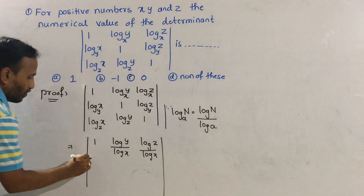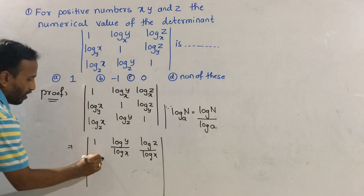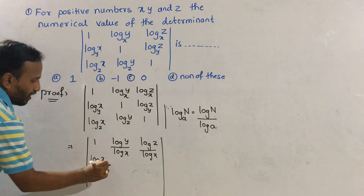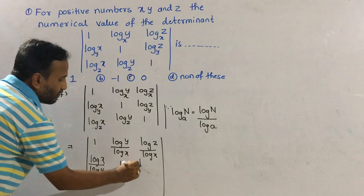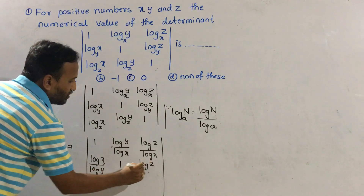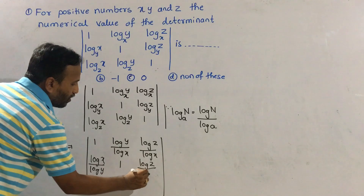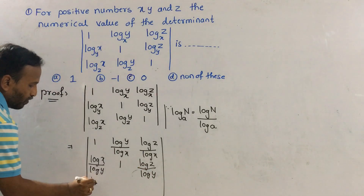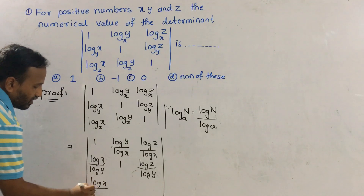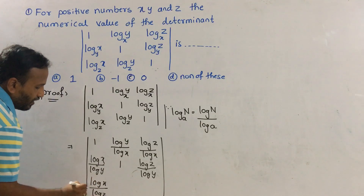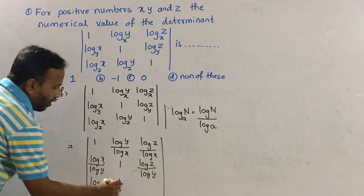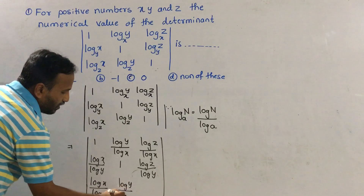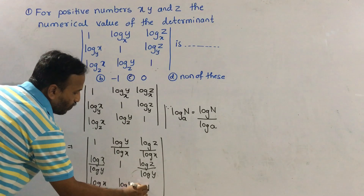The second row becomes: log x divided by log y, 1, log z divided by log y. The third row becomes: log x divided by log z, log y divided by log z, 1.